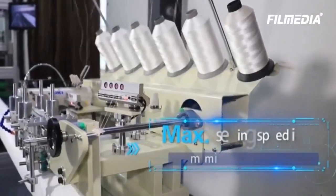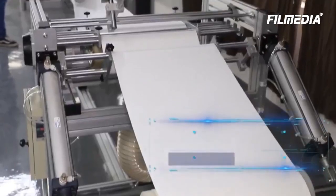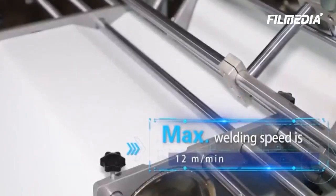Maximum sewing speed is 10 meters per minute and maximum welding speed is 12 meters per minute.